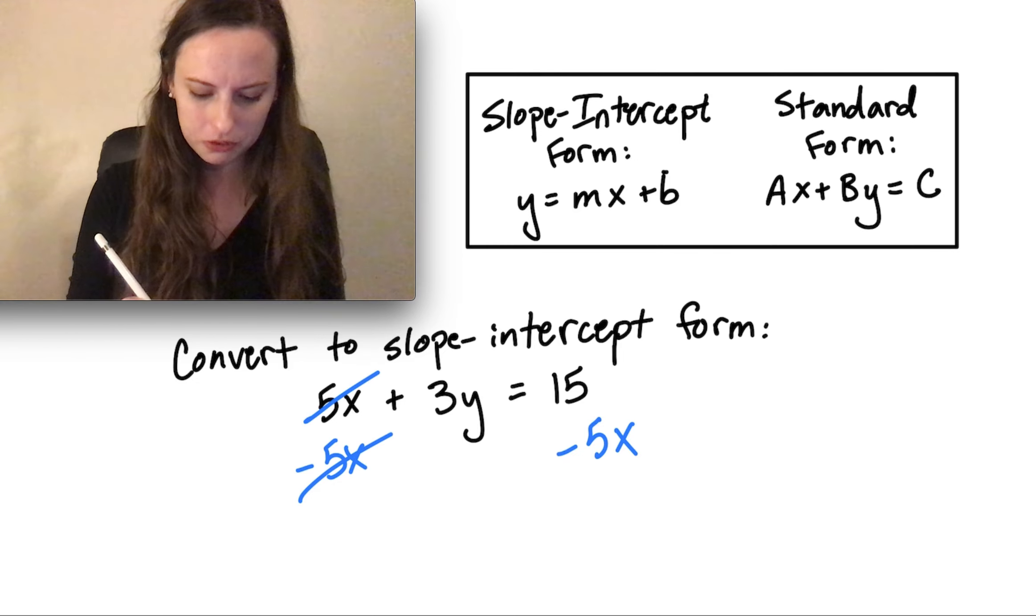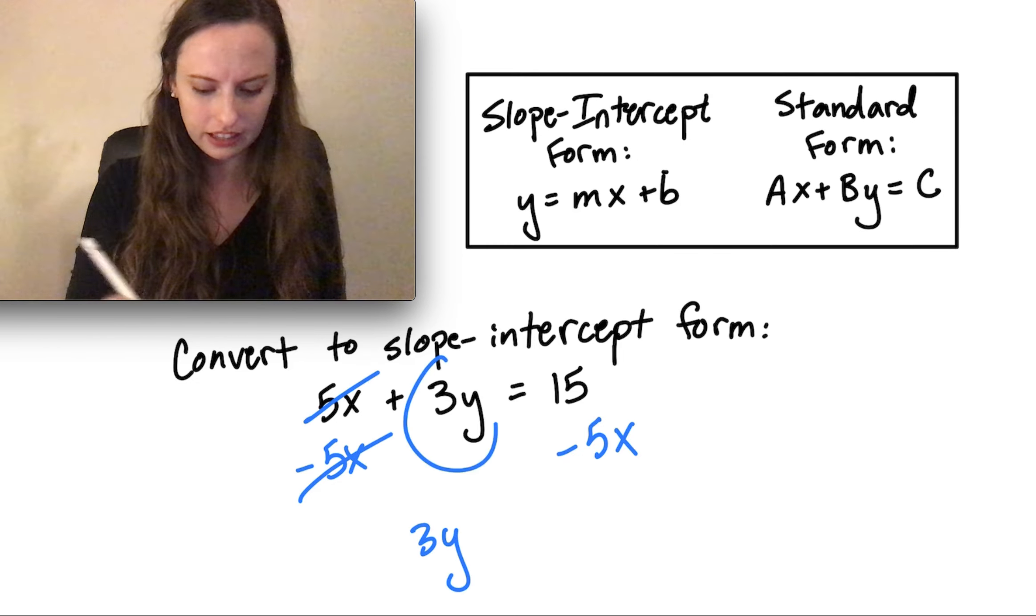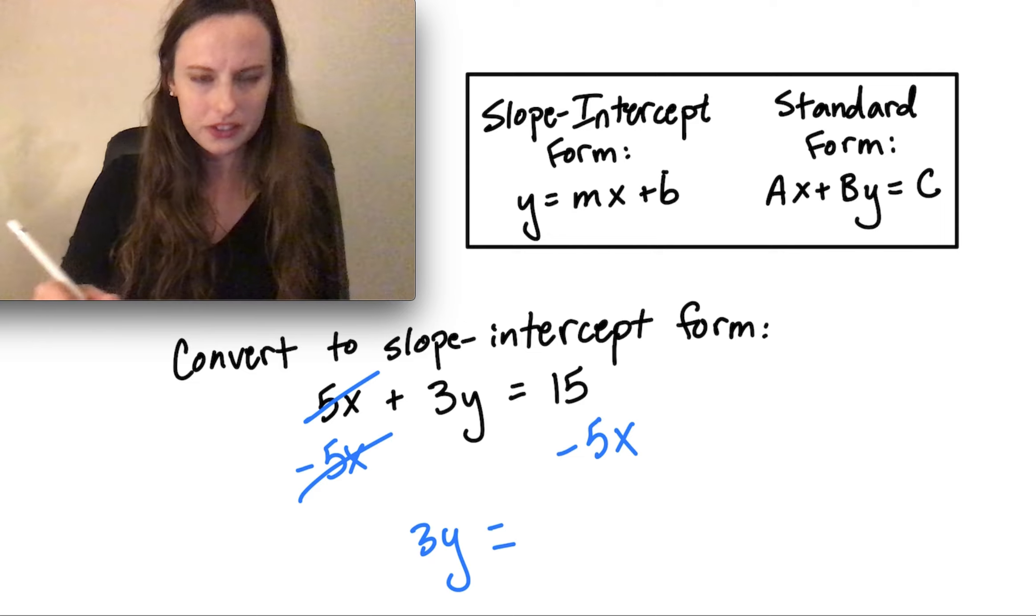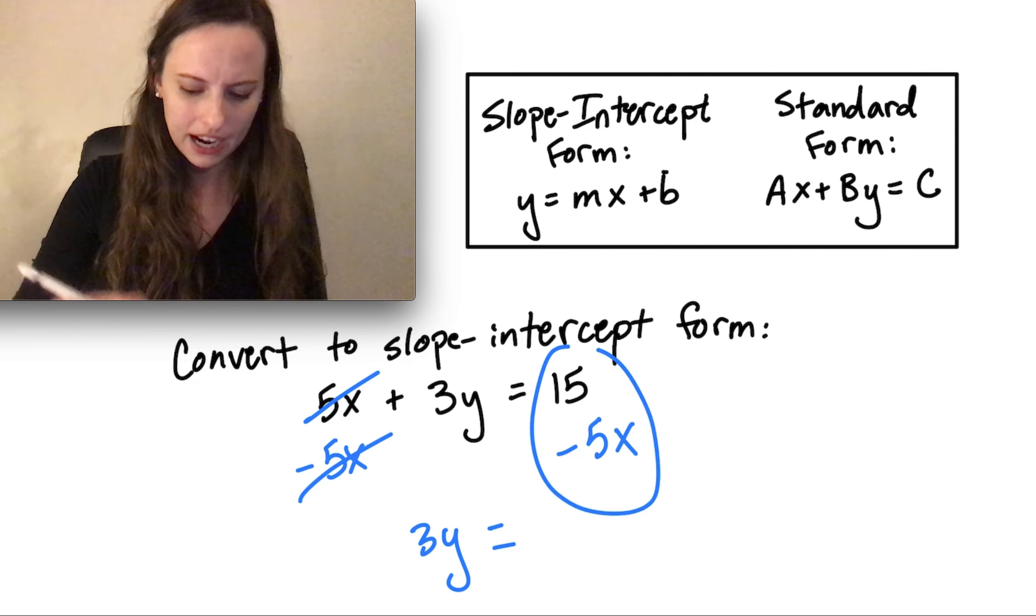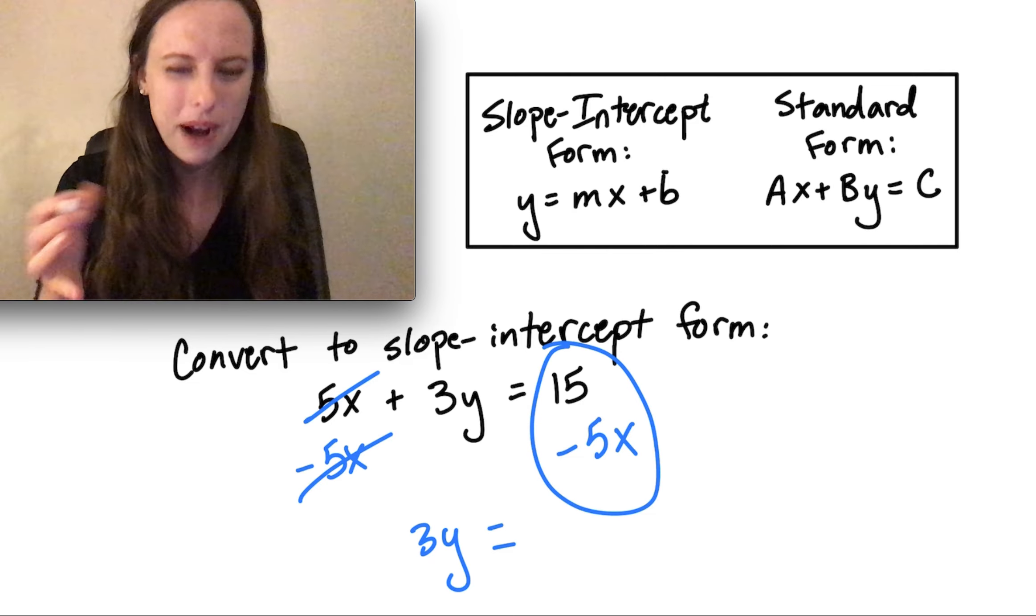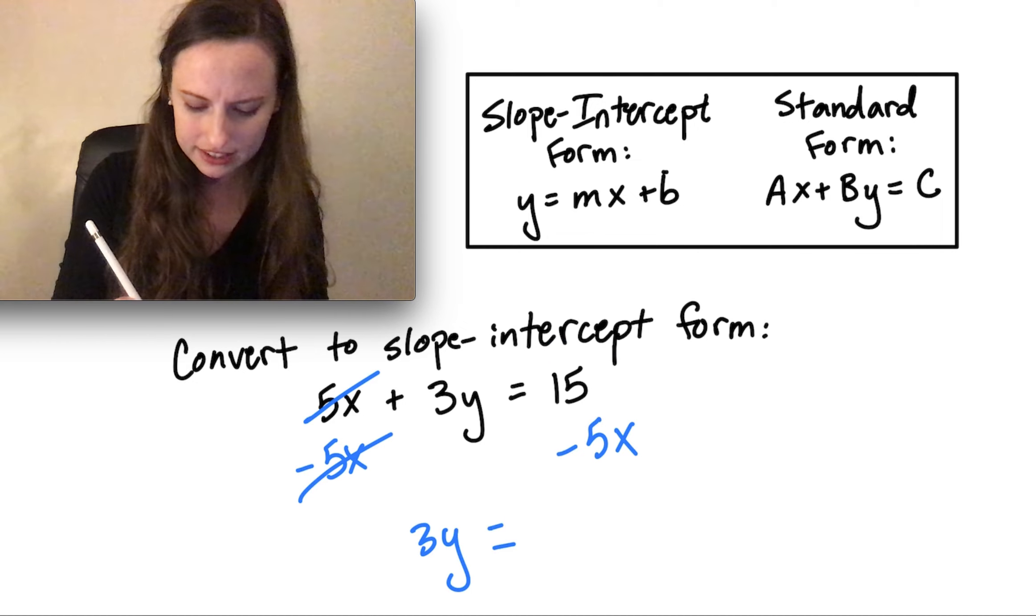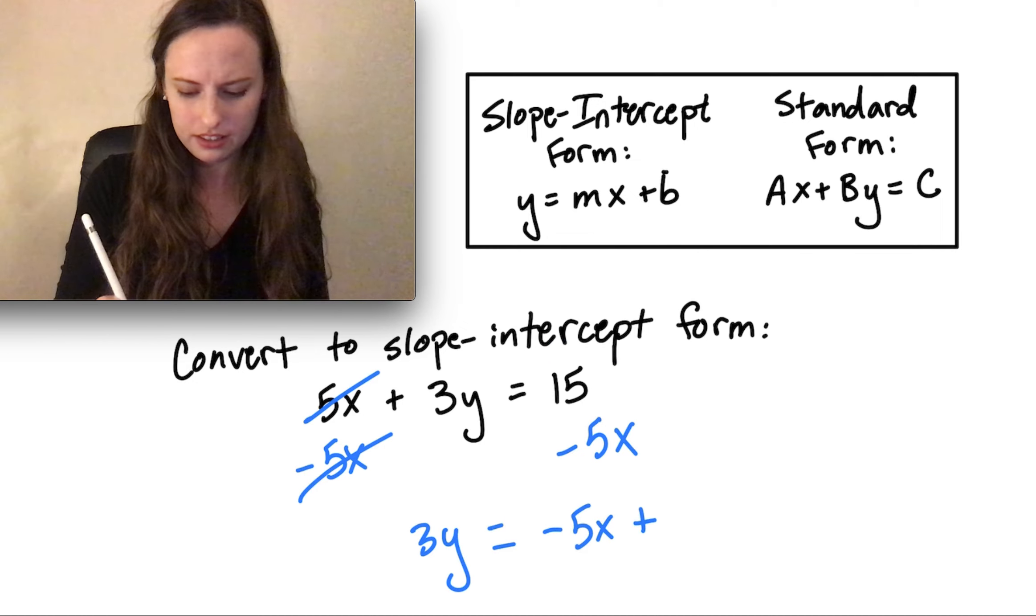Those cancel. I'm left with 3y on the left-hand side equals, and again, I just want to combine these two, even though I can't combine the like terms, so I'm just going to write them next to each other. Negative 5x plus 15.